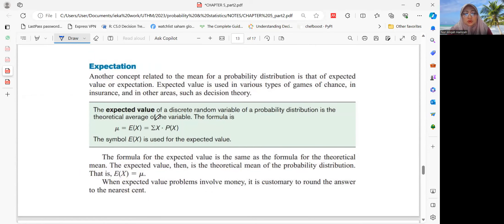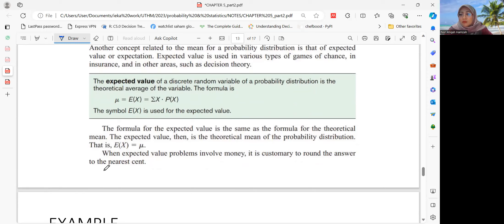Next is expected value. Expected value or expectation is another concept related to the mean for a probability distribution. Expected value is used in various types of games of chance, in insurance, or in other areas such as decision theory. The expected value of a discrete random variable of a probability distribution is the theoretical average of the variable. So the formula is mu is equal to E(x). E(x), where E is expected value. The formula is summation of x P(x). The symbol E(x) is used for the expected value. The formula for the expected value is the same as the formula of the theoretical mean. So E(x) is actually mu.